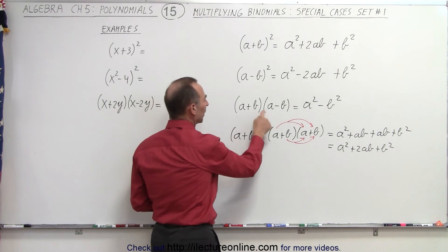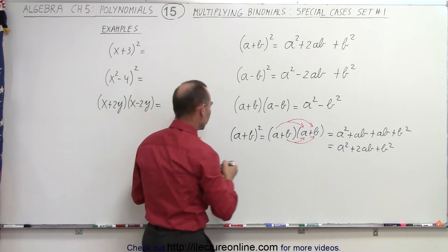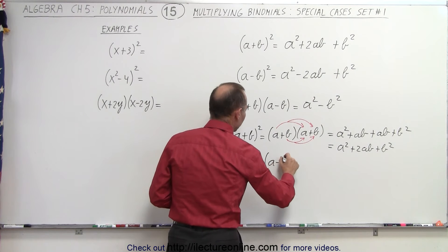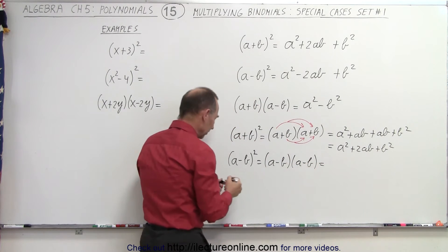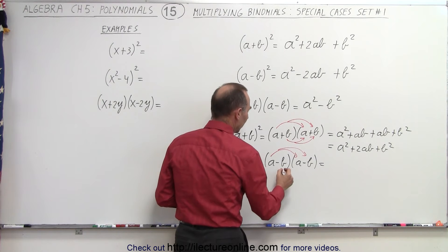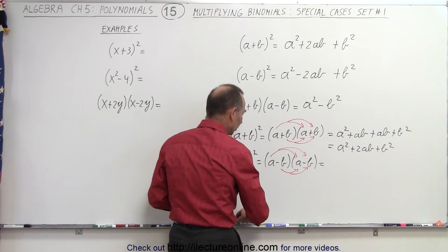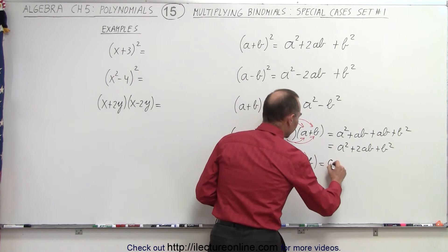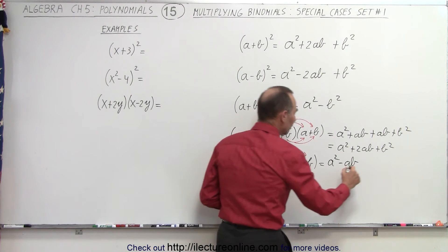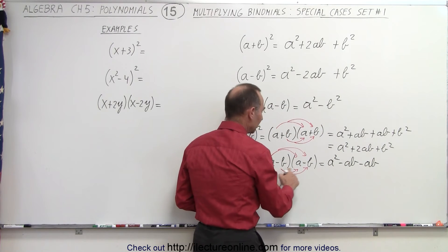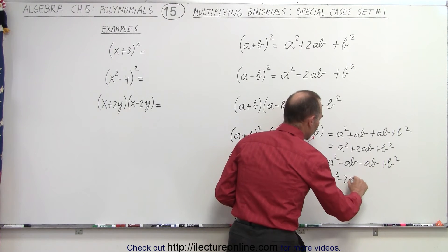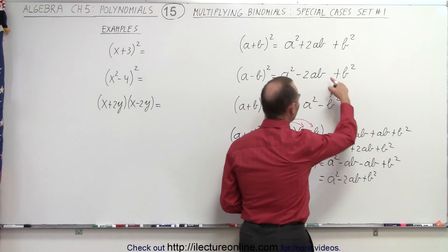Now let's verify a minus b quantity squared, which is a minus b times a minus b. Using the same approach, we multiply the first term times each of the two terms in the second binomial, and the second term times each. We get: a times a is a squared, a times negative b is minus ab, minus b times a is another minus ab, and minus b times minus b is plus b squared. Combining like terms gives us a squared minus 2ab plus b squared — just as expected.